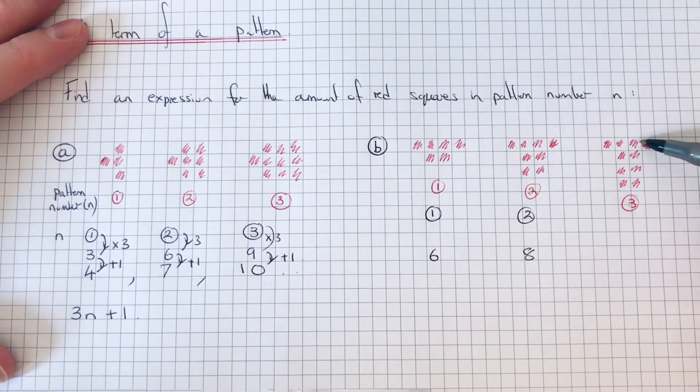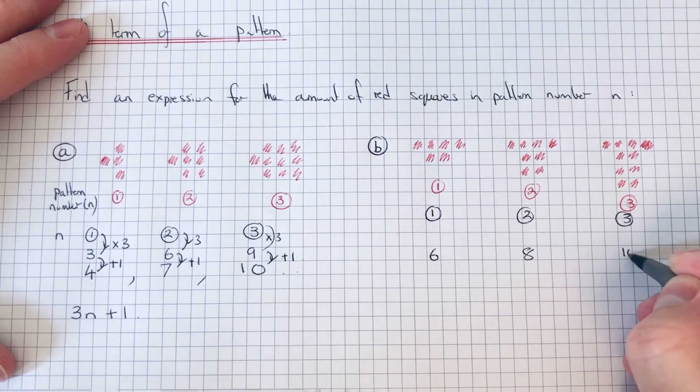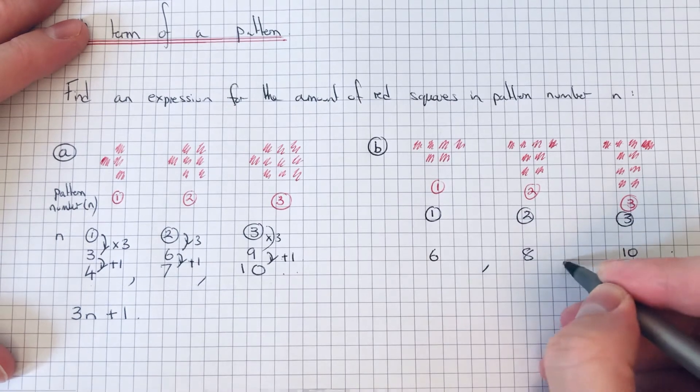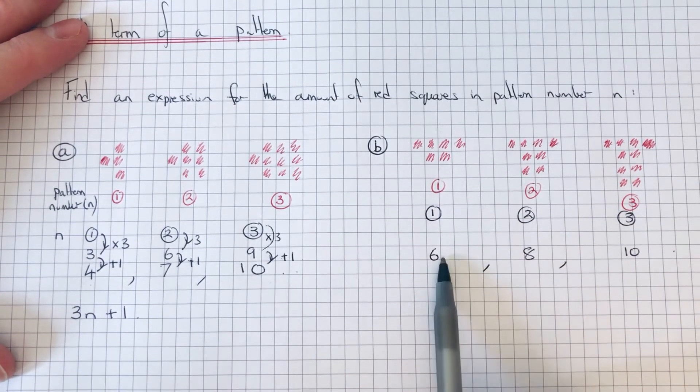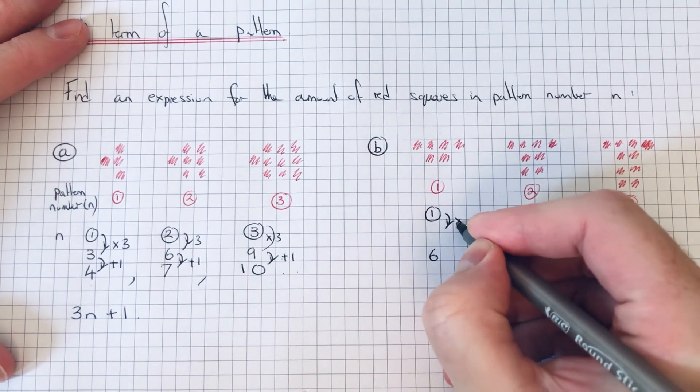This pattern is going up in 2s, so we're going to multiply the top numbers by 2 because the formula has something to do with the 2 times table.